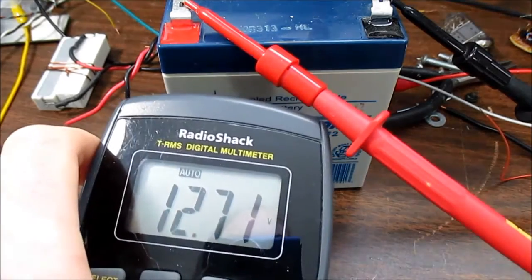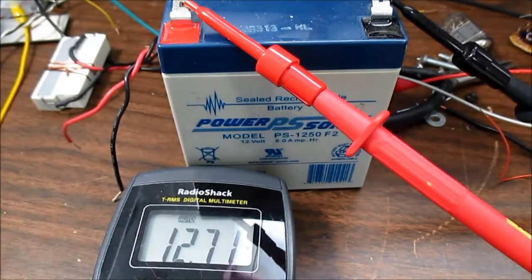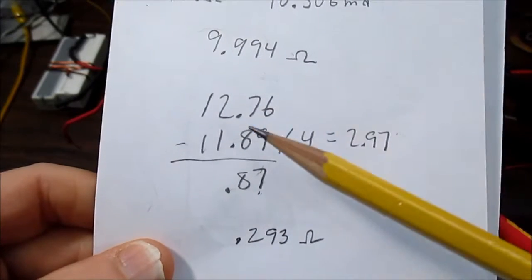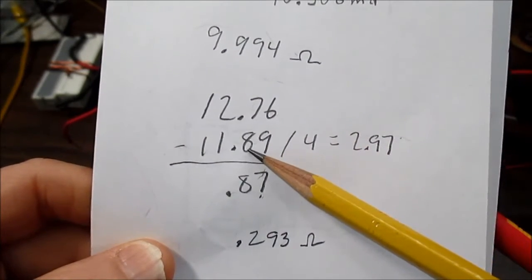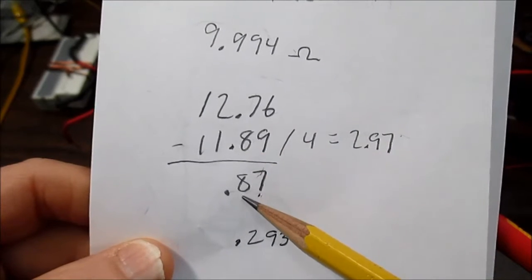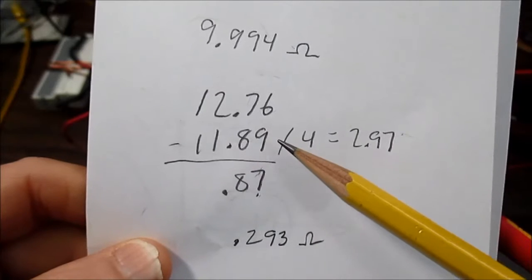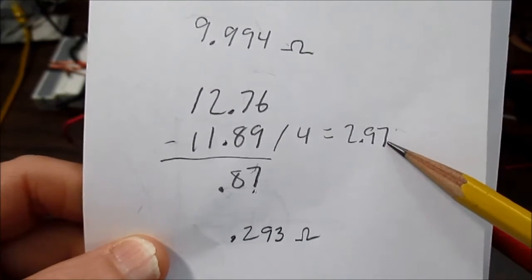Well after a couple minutes the battery hasn't completely gone back all the way up but you know it's slowly working its way up. So I just took the unloaded voltage minus loaded and that's the voltage difference, and the loaded divided by 4 ohms is that many amperes.